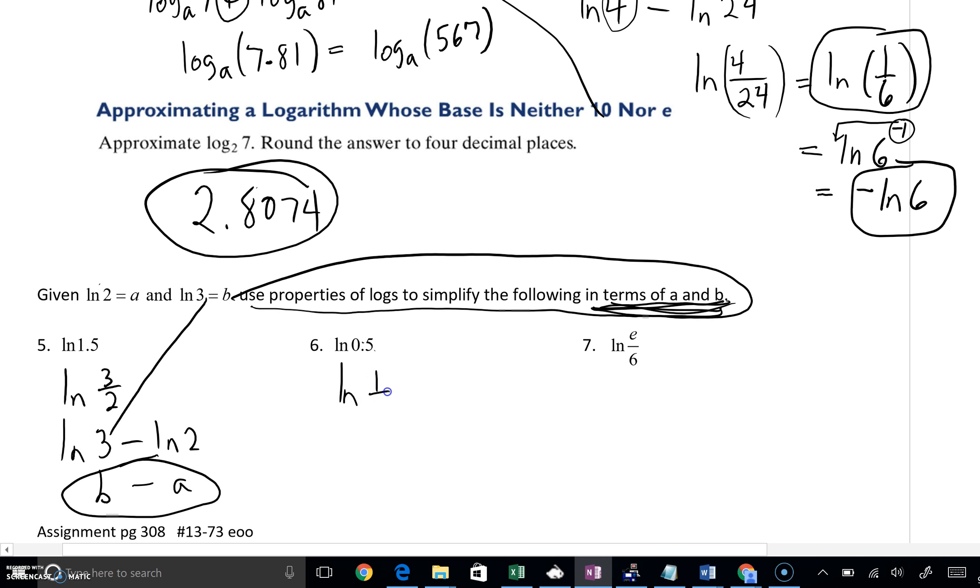0.5, well my goodness, that's really 1 over 2. We just saw a moment ago that we could write that as 2 to the negative 1. And that problem with the 1/6, I can bring that negative down in front. Negative 1 times natural log of 2. What's natural log of 2, though? Oh, it's a. This would be negative a.